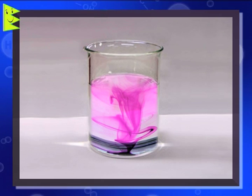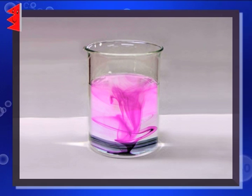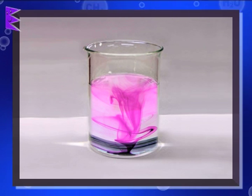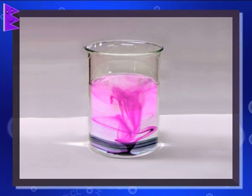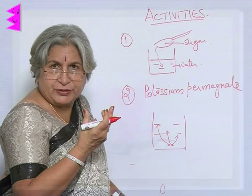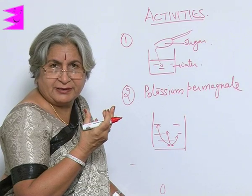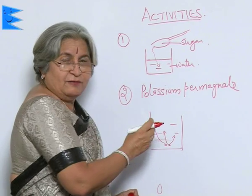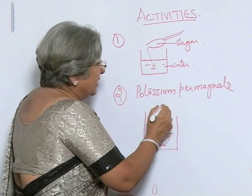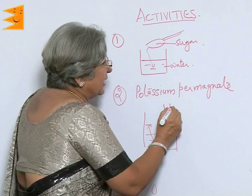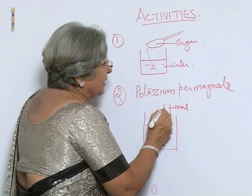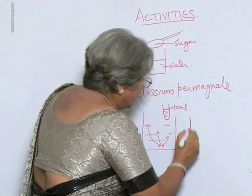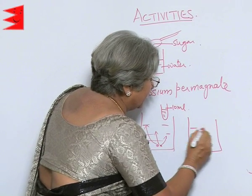Slowly, the streaks will get merged into the water and it will become uniformly colored — a bright pink or purple color. You have seen potassium permanganate. Now take about 10 milliliters of this colored water and put it again into a beaker which has about 100 milliliters of water.